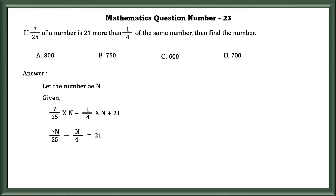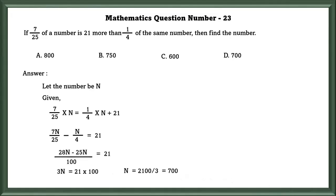Now, we will bring all the n's to the same side. So, 7n by 25 minus n by 4 is equal to 21. From this, we can get the value of n. So, the value of n is equal to 700.